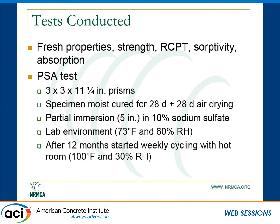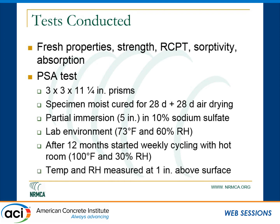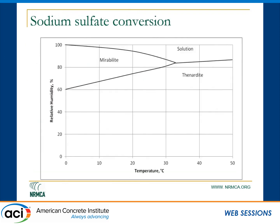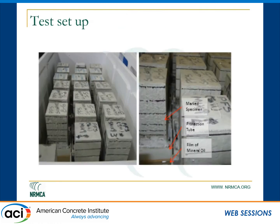After 12 months of steady immersion, we started weekly cycling in the hot room at 100°F and 30% humidity to try to make the phase change happen. We measured temperature and humidity about 1 inch above the surface. When we did that variation of temperature and humidity, as many other presenters have shown, you can have phase change going between mirabilite and thernadite, so you get more rapid degradation. And you will see that in the test results — that is indeed the case.